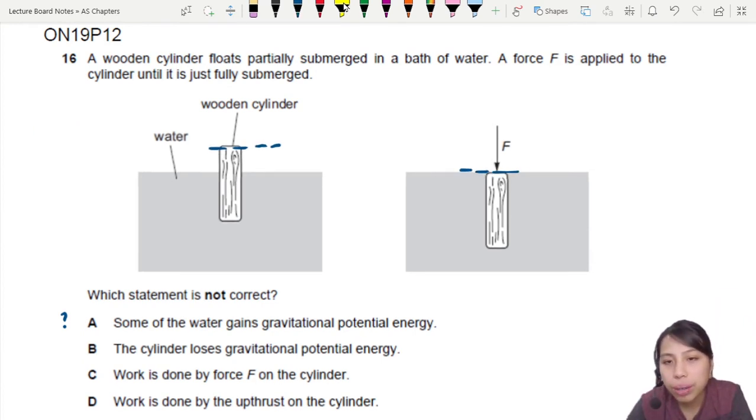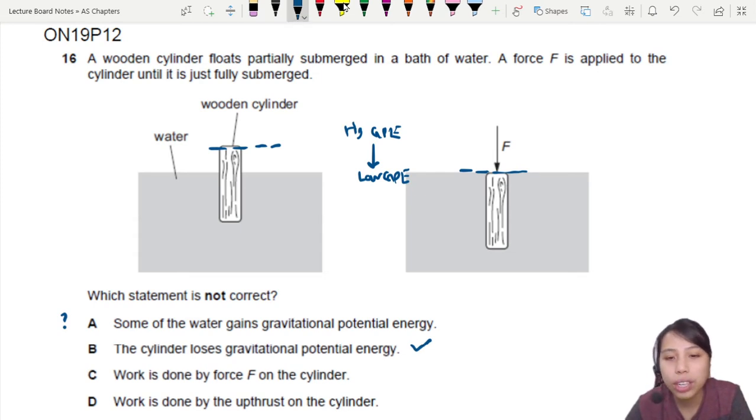But when you push down, you move down to a lower height and lower GPE. From high GPE to low GPE. So this one is correct. The cylinder has lost some GPE. There's a change in energy happening here. GPE decreases.